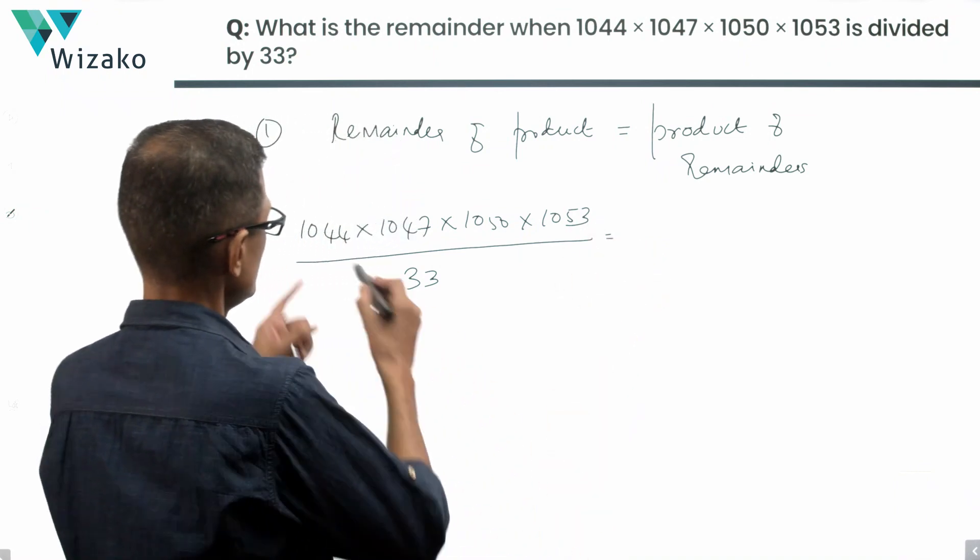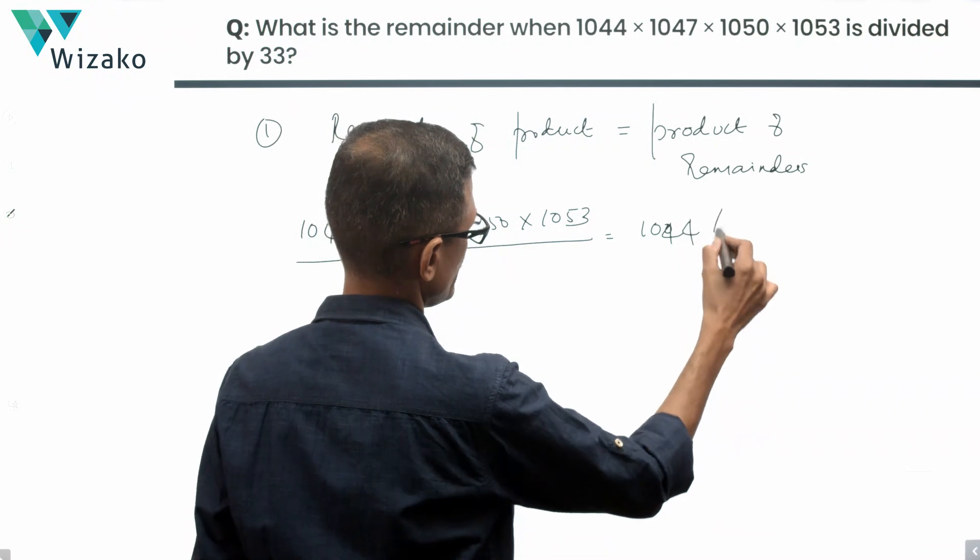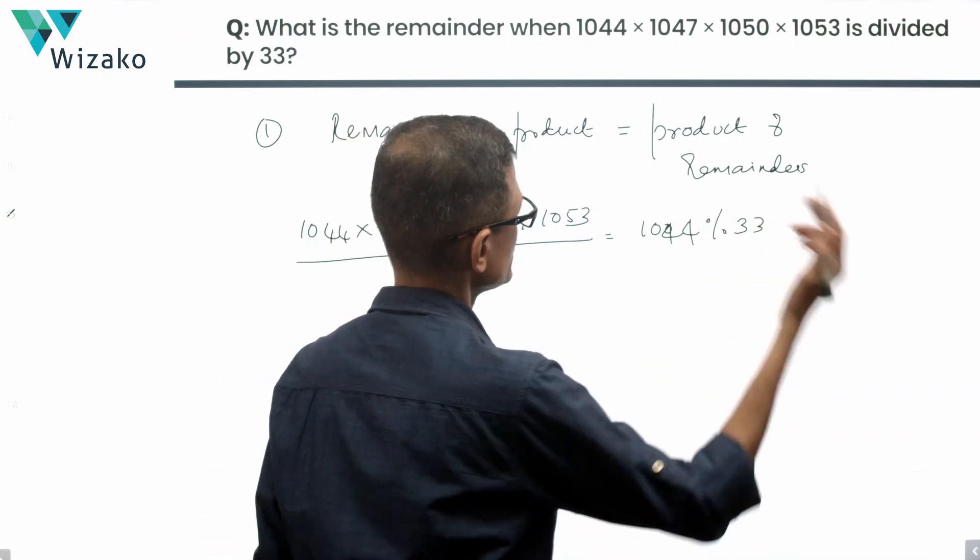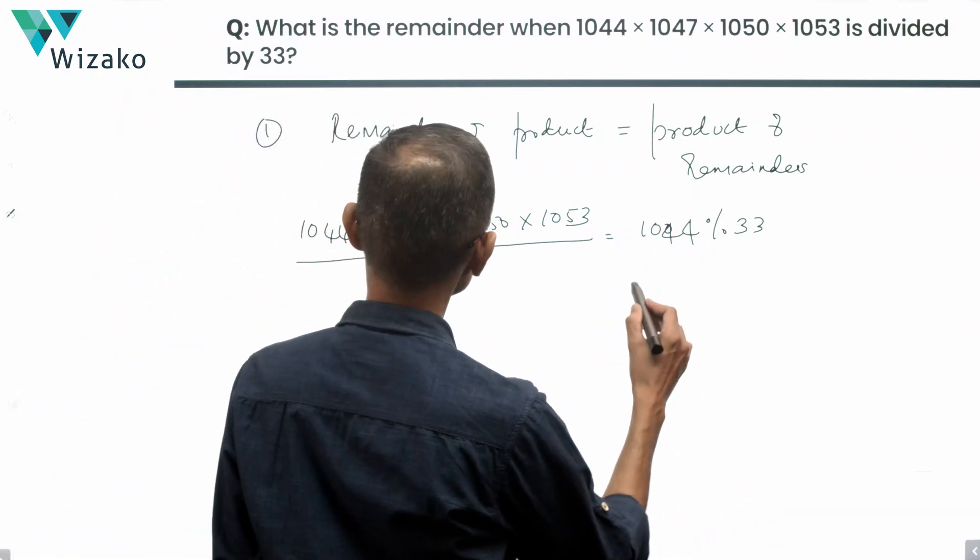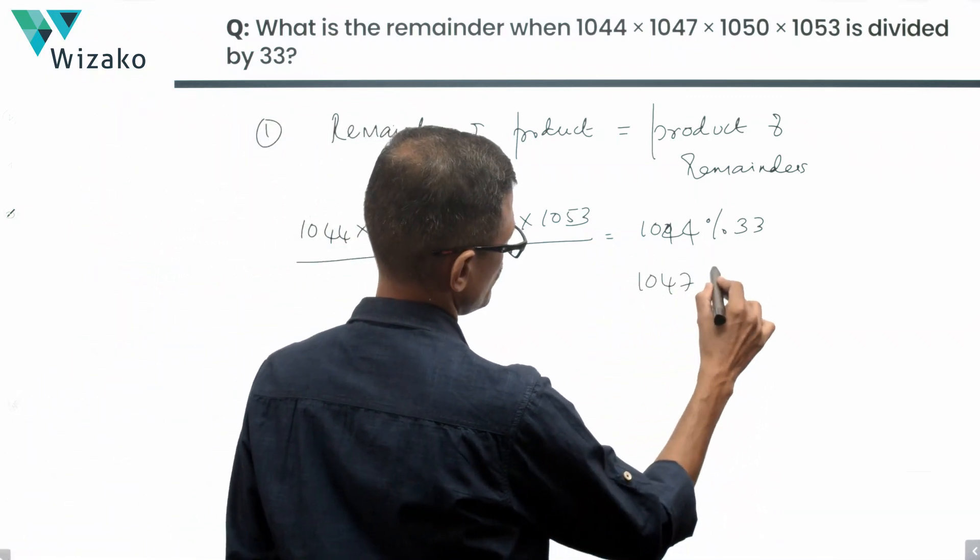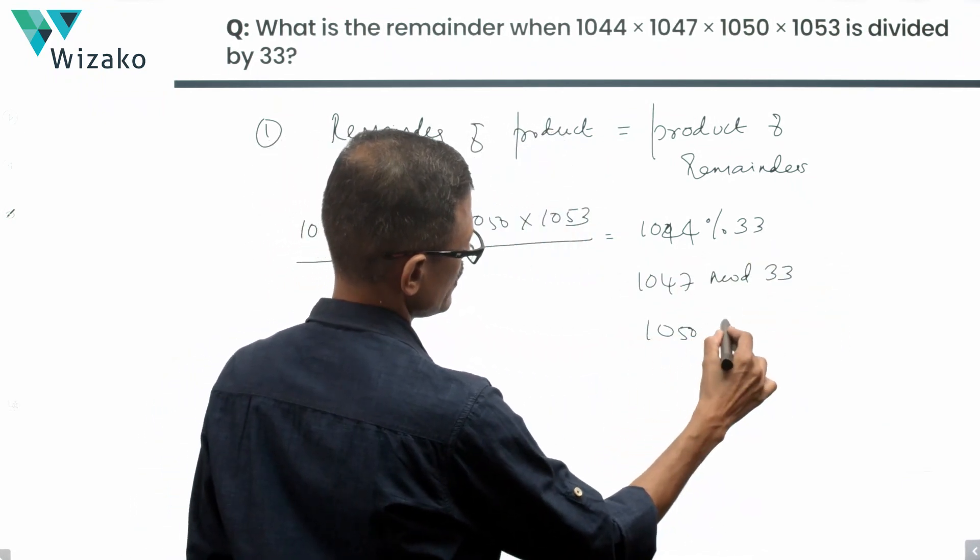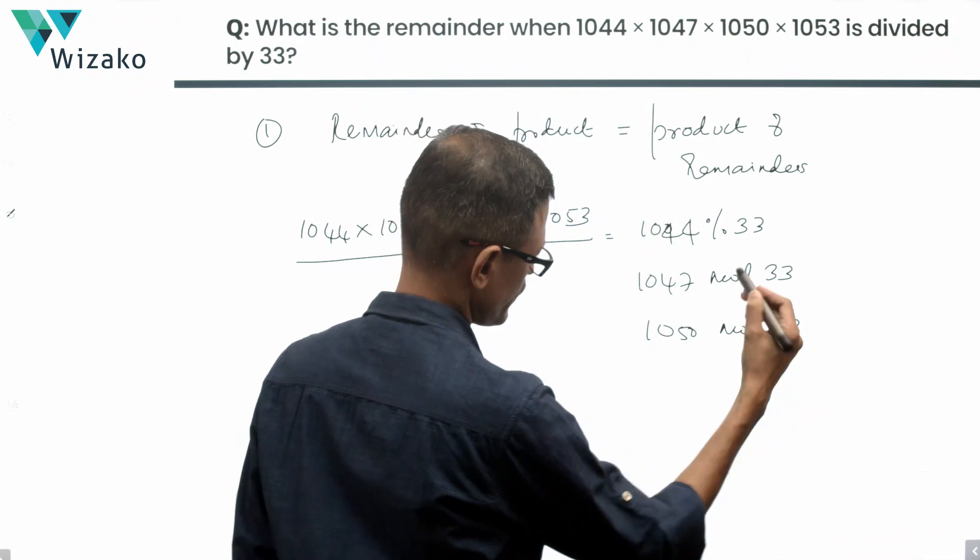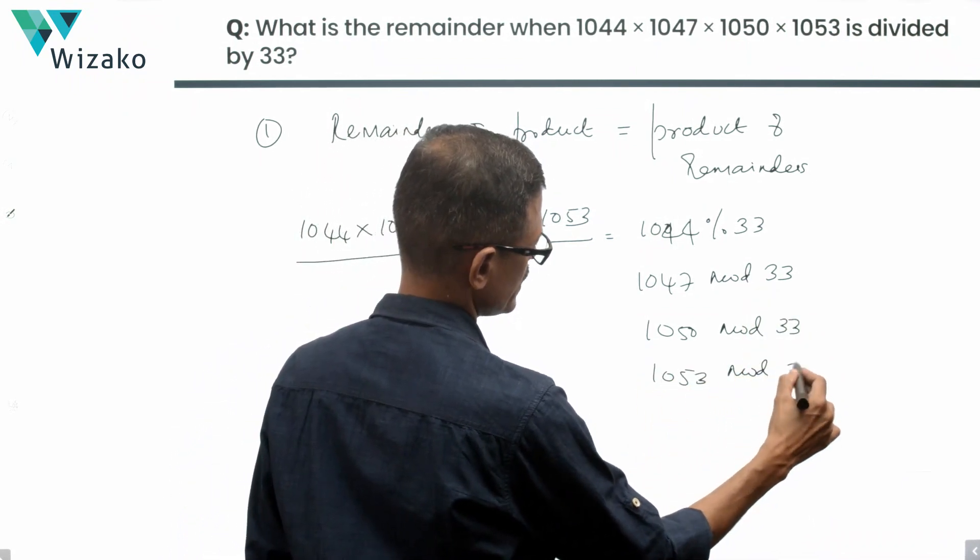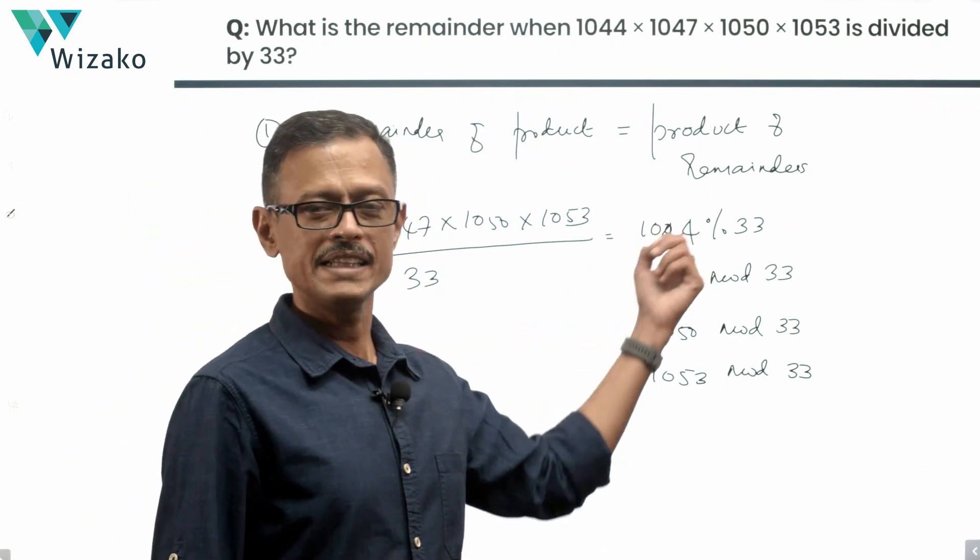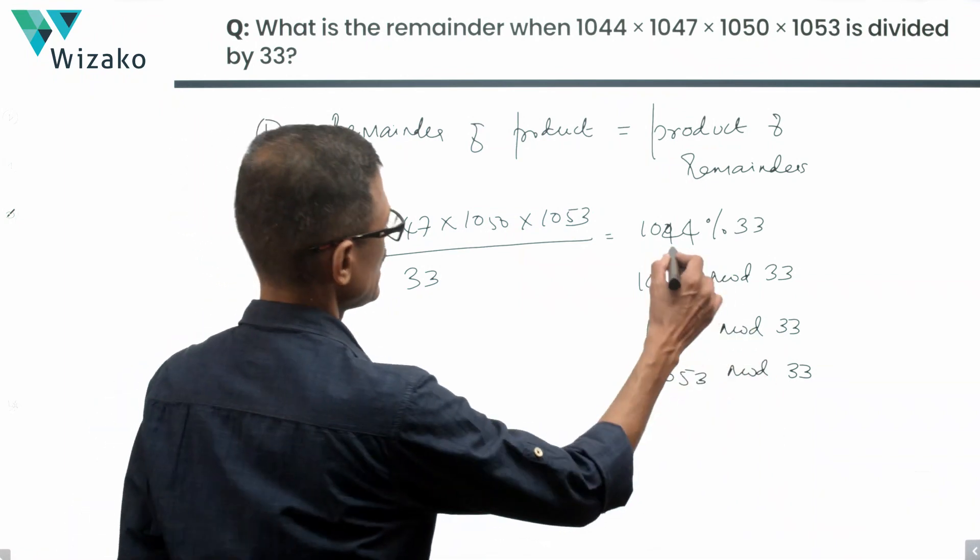Instead, find the remainder when 1044 is divided by 33, which is 1044 mod 33, then find 1047 mod 33, 1050 mod 33, and 1053 mod 33. Actually compute the remainder for each of these individual numbers when they are divided by 33, then multiply all of these.